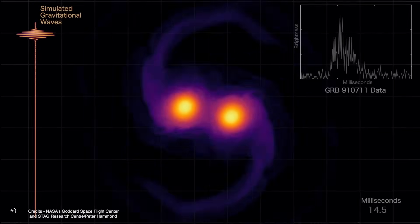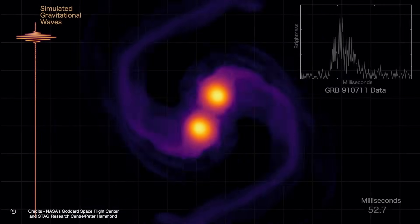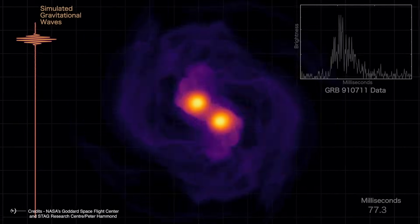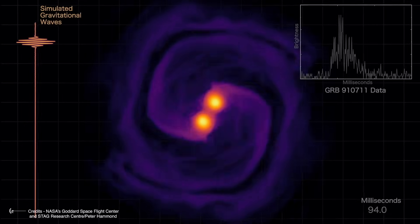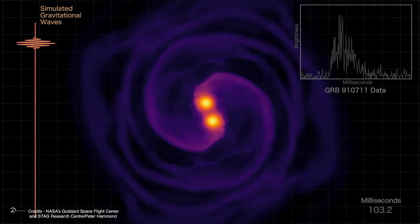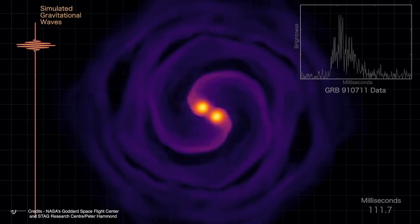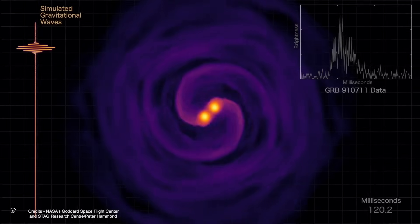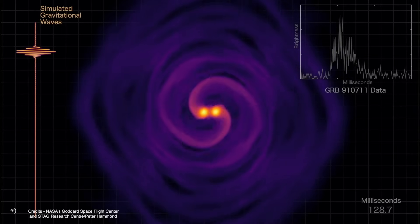While these other heavyweight neutron stars remain relatively stable, only J0952-0607 shows the combined risk factors of extreme mass, ongoing accretion, and observable structural changes that point toward imminent collapse.